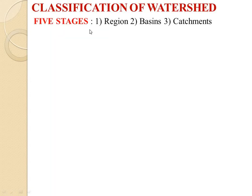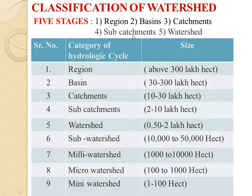Classification of watershed. There are five stages or regions: basin, catchmates, subcatchmates, and watershed.